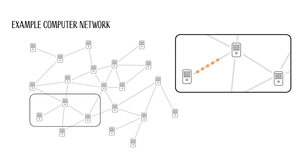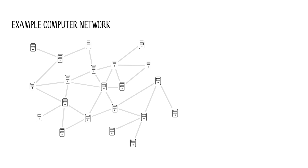Computers can send data to each other via these cables. However, computers do not need to be directly connected to exchange data. Computers can also forward data. Here, in the illustration, the left computer A can exchange data with the right computer B, even though they are not directly connected, because the middle computer C forwards the data.